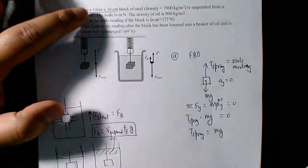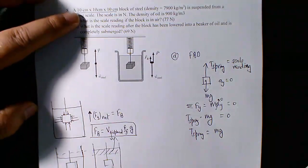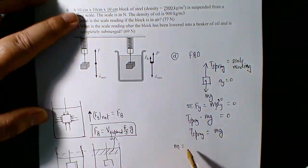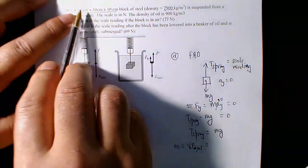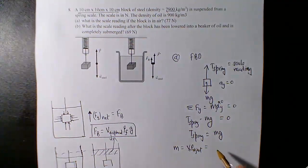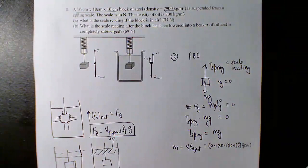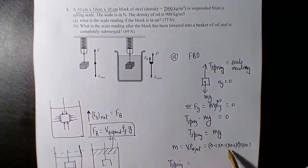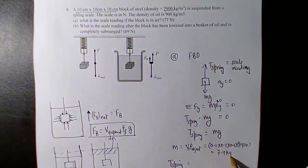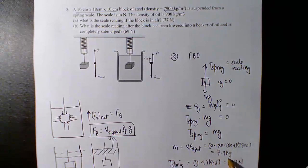Mass is volume times density: 0.1 × 0.1 × 0.1 times 7900, which gives 7.9 kg. So the scale reading is 7.9 × 9.8, which is about 77 Newtons. That's the first part of the question — a straightforward mechanics problem.